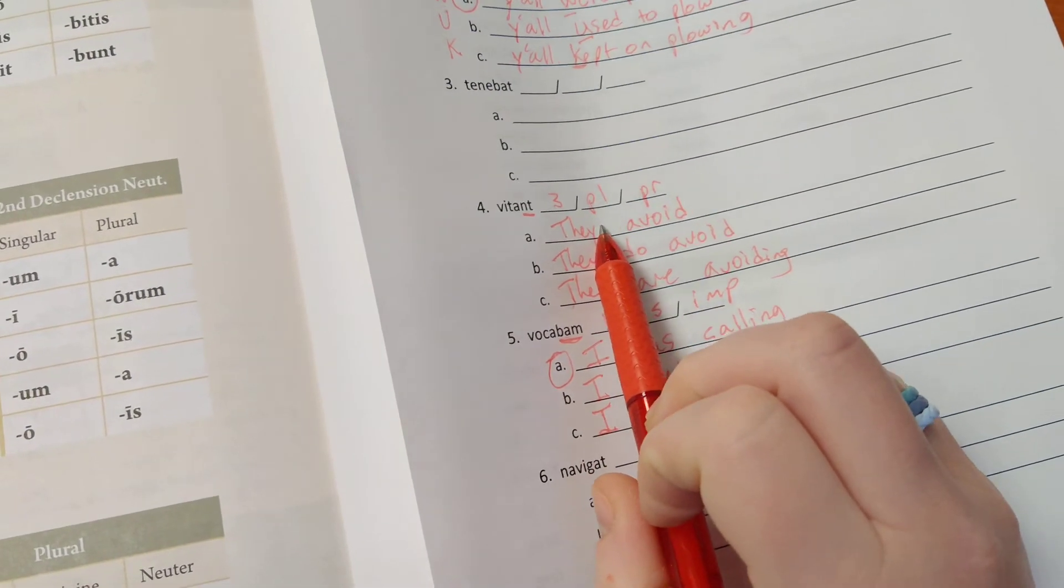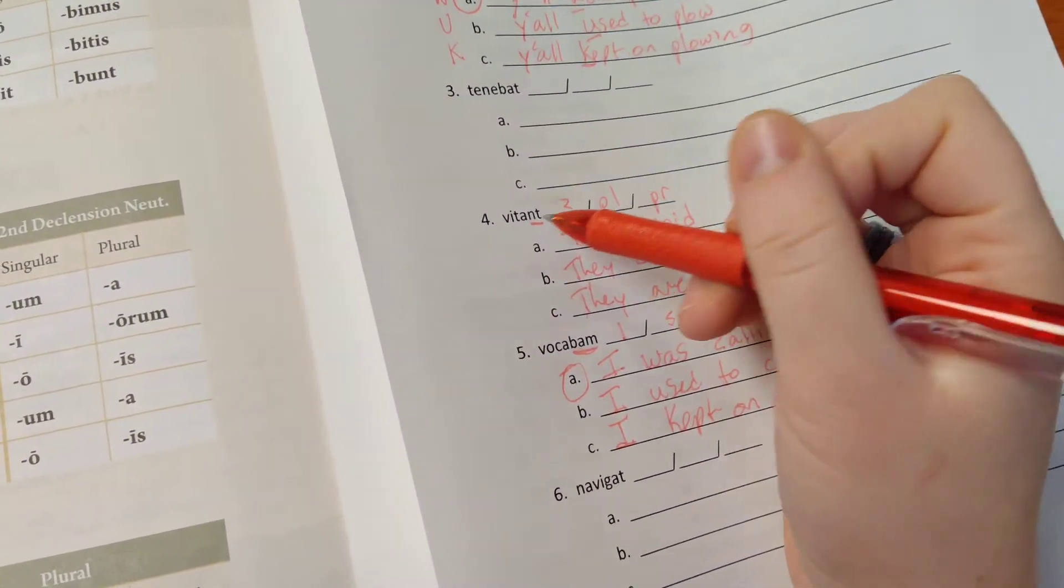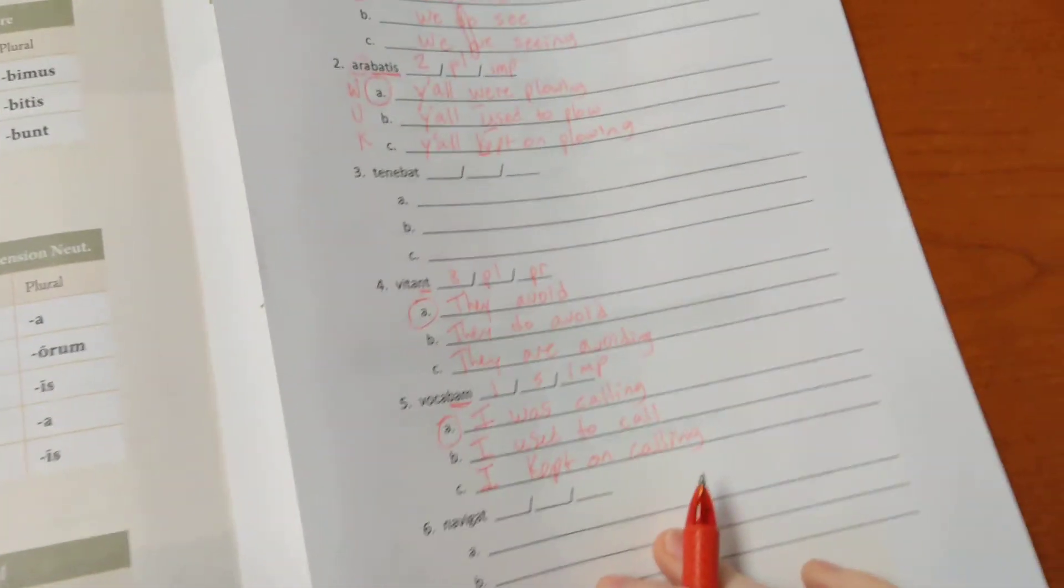Our preferred translation for imperfect tense is the W of WAK, so I was calling. Our preferred translation in the present tense is just the very basic one without a helping verb, so they avoid.